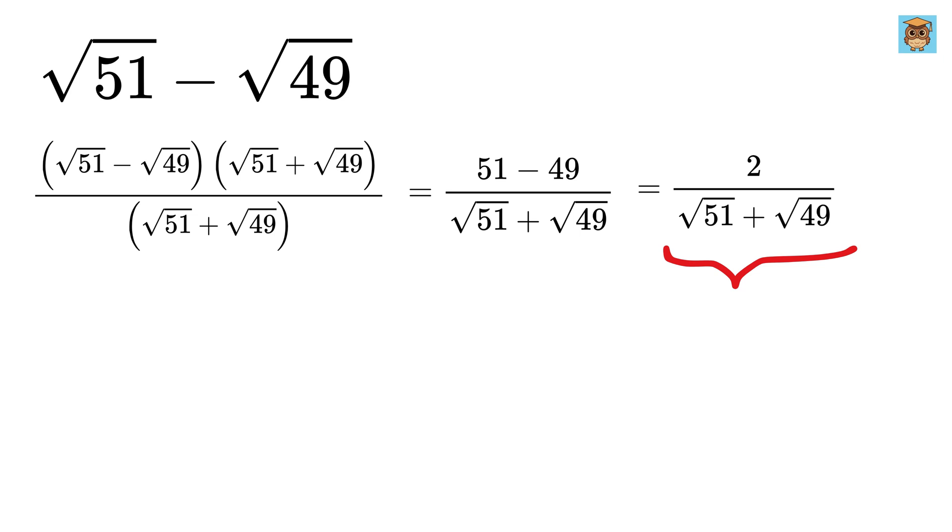So now our job is to approximate this denominator. For that, we will find the integer numbers between which this sum might exist. Let us call this sum as x, so we will try to find the integer value which is just smaller than this x and just larger than this x.